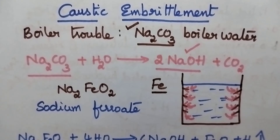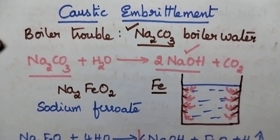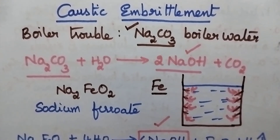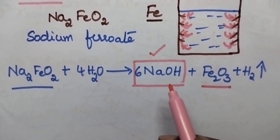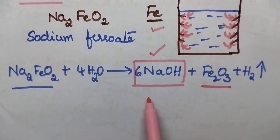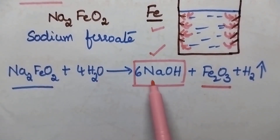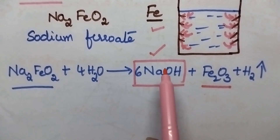This sodium ferroate is soluble in water and results in the formation of oxides of iron along with the formation of alkali. There is a possibility for the formation of more amount of alkali, and hence it propagates the dissolution of iron. This may cause embrittlement of the boiler material, and the whole process is called caustic embrittlement. Because of the formation of sodium ferroate, it leads to the formation of more and more alkali, which again reacts with the boiler material and causes caustic embrittlement.